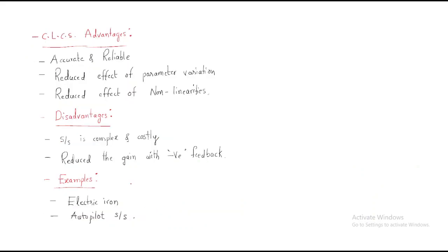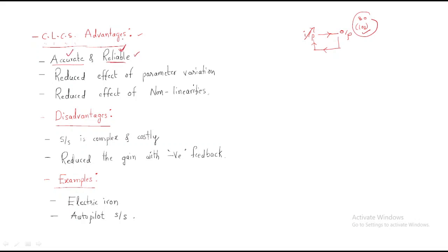Now, closed-loop control system advantages. First, it is accurate and reliable. By considering the output and taking the feedback, the input is varied and the output is corrected. For example, if the required output is 100 but we have only 80, the input will know to supply more power and automatically reach 100. That's why it is very accurate and reliable.